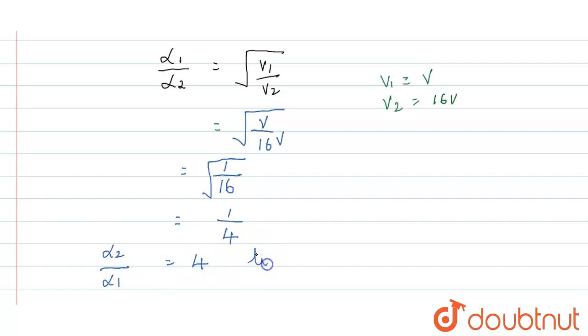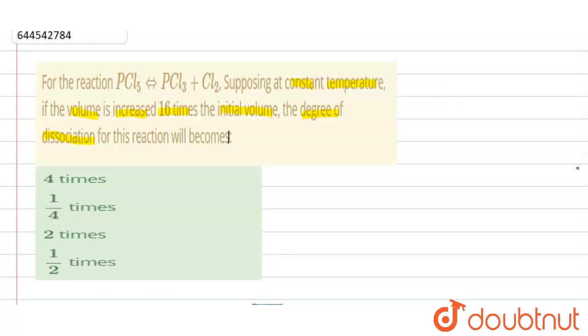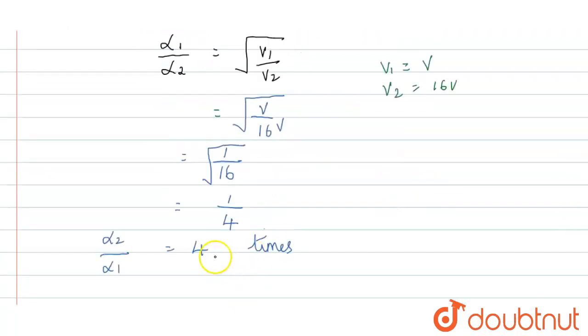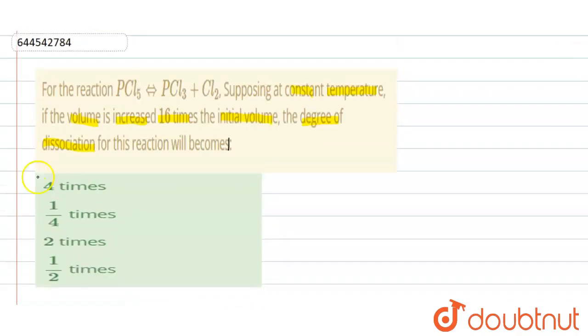So, 4 times. That is, the degree of dissociation for this reaction will become 4 times. That is the answer. Let us now look into the options. First option itself is the correct answer. 4 times.